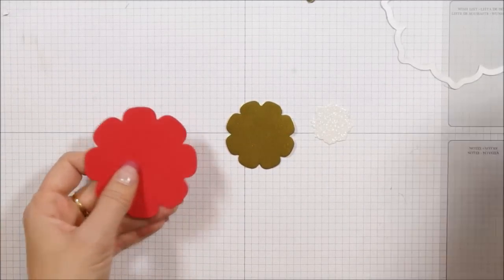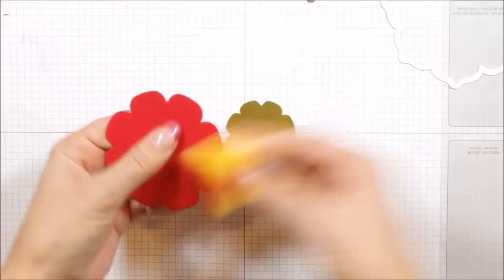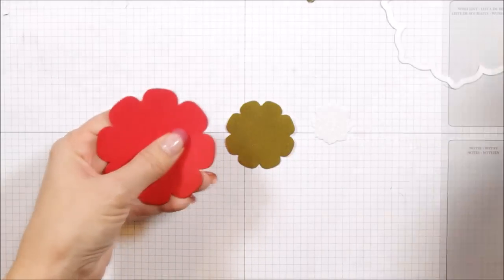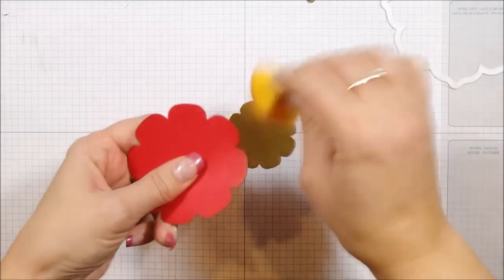So we're going to do the same. We're going to take our sponge with some red and just go all the way around just to add again some more dimension. And you want to do that on this layer and also on the Glimmer paper.